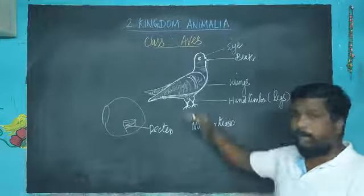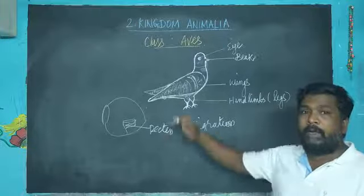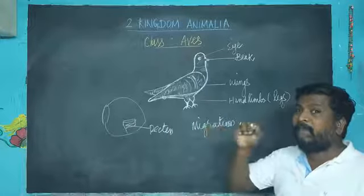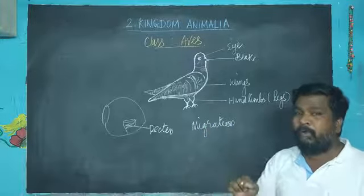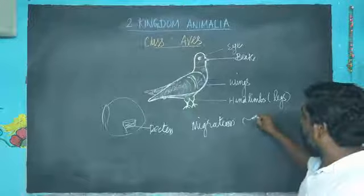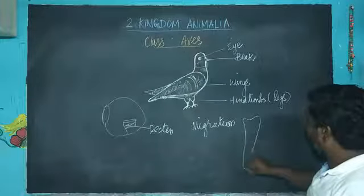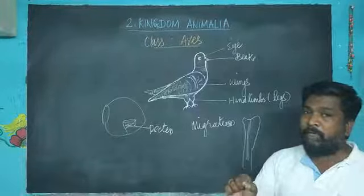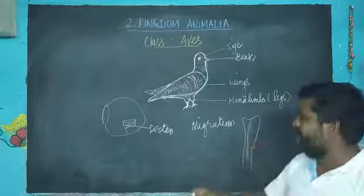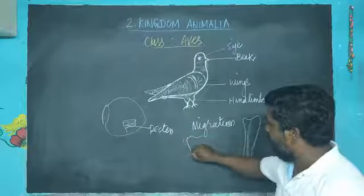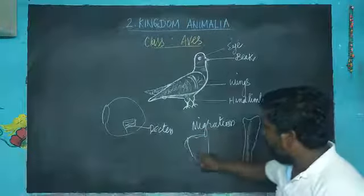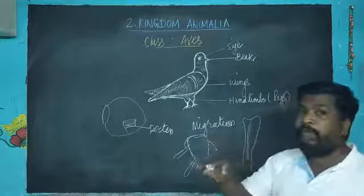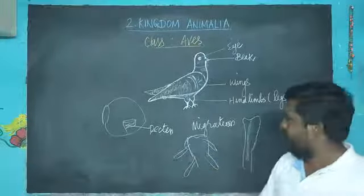They take care of their young ones — that is parental care. They excrete through the kidneys. Their bones are pneumatic bones, meaning the bones are hollow inside, which is helpful for flight. Respiration is through the lungs with extended air sacs. These air sacs help to reduce the body weight of the birds while flying.